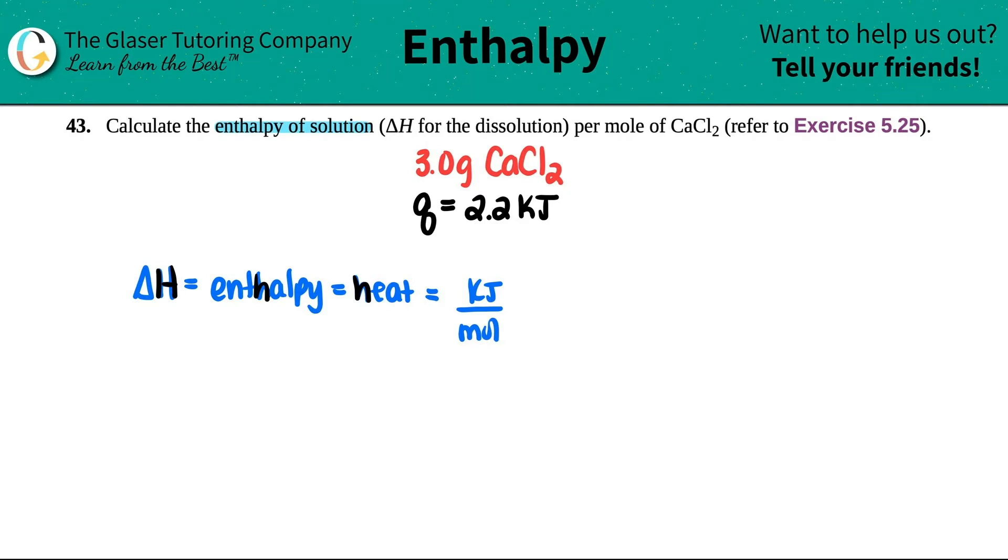So basically what we have to do here is we just have to find out how many kilojoules were in this reaction in 5.25, how many moles, and then we just divide the two. Now the easy part, we found out how much heat was absorbed. We found out that in that reaction, there was 2.2 kilojoules that were going to be absorbed in the solution. So that's cool.